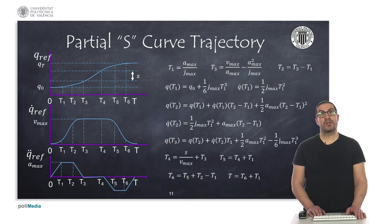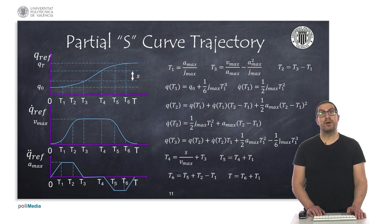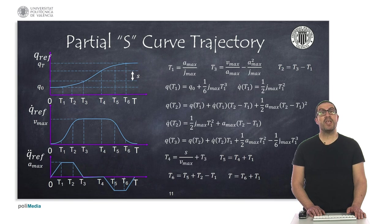A partial S-curve trajectory is very similar to the one shown before, but with a trapezoidal profile in the acceleration instead of a triangular profile. This means that there is a constant acceleration time at maximum acceleration. The math here is more tedious to explain, so I prefer to let you deduce all these formulas using the same procedures shown before. The main difference here is that the jerk, noted here as jmax, is now given.